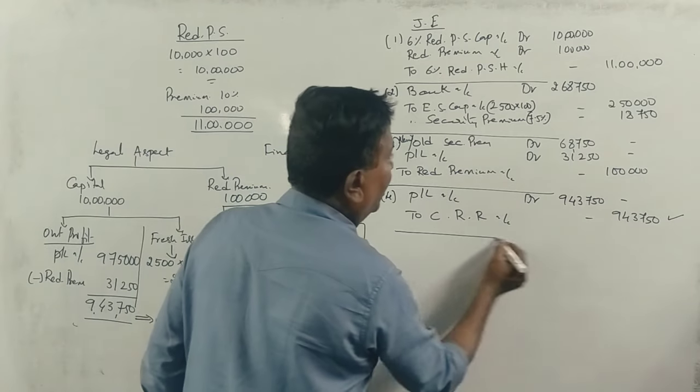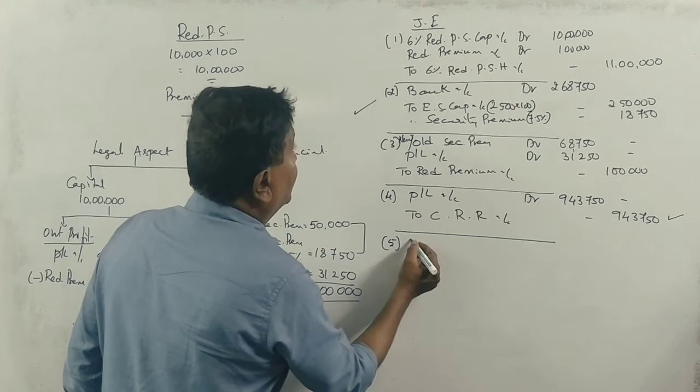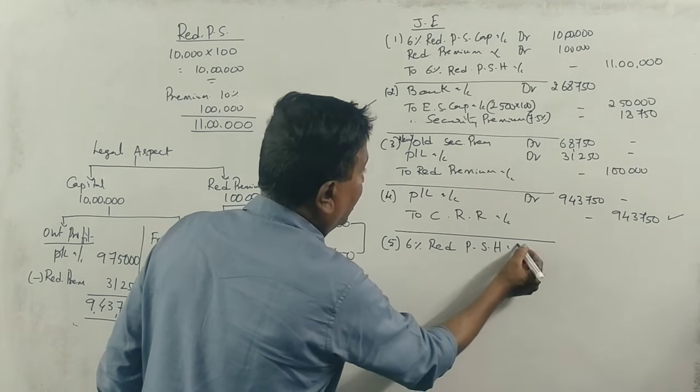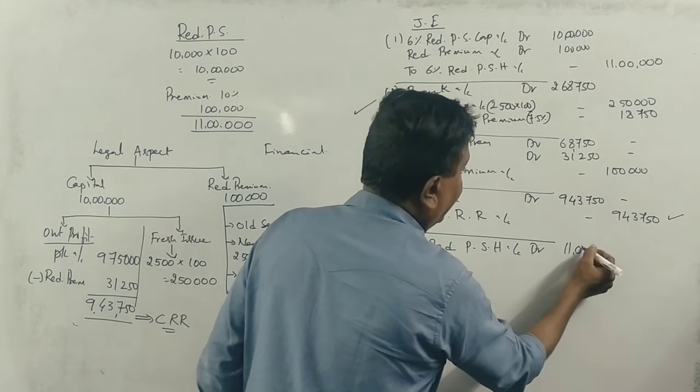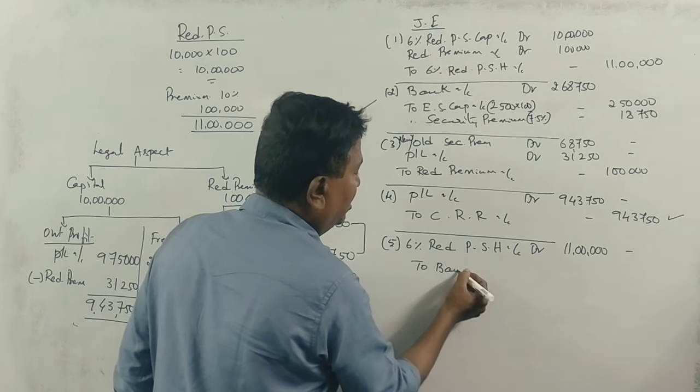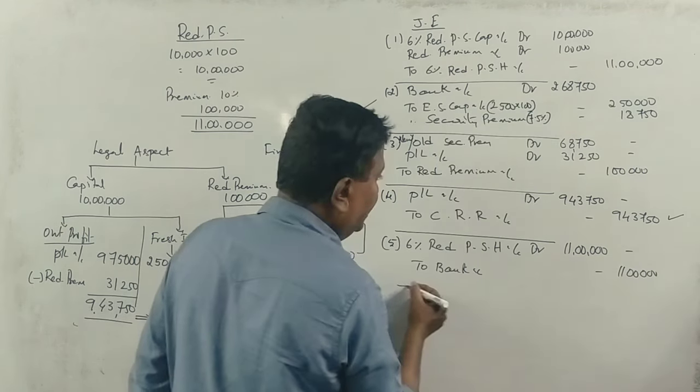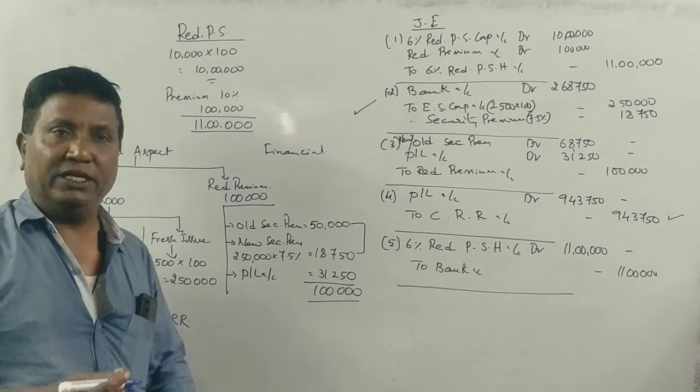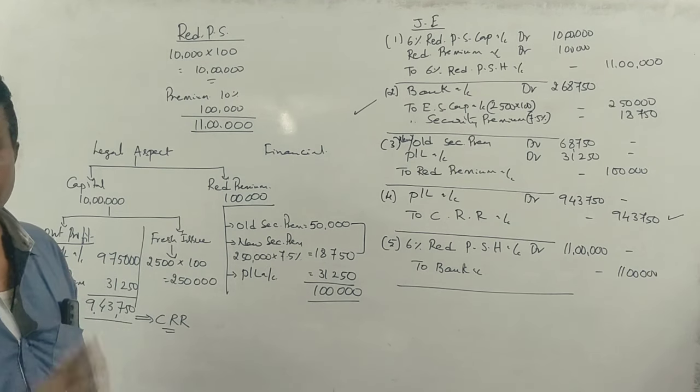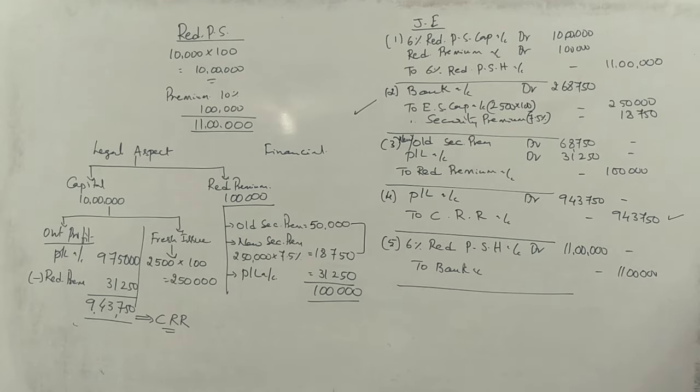And the last journal entry is: 6% Redeemable Preference Shareholders Account debit 11 lakhs, to Bank Account 11 lakhs. Being Preference Shareholders redeemed and payment made. That's right. We have completed all the entries. That's the complete solution.